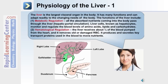The liver is the largest visceral organ in the body and has many functions. These include metabolic regulation and hematological regulation. Within metabolic regulation, all the absorbed nutrients coming into the body pass through the hepatic portal circulation and enter the liver. Hepatocytes within the liver monitor and regulate blood levels of amino acids, lipids, and carbohydrates.